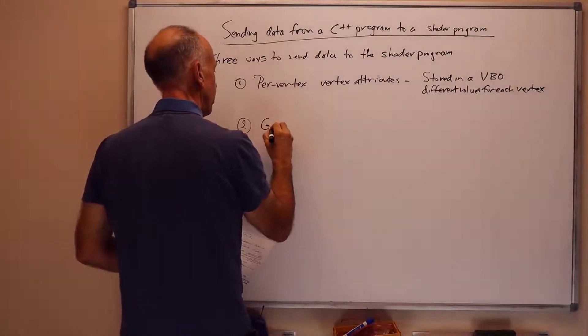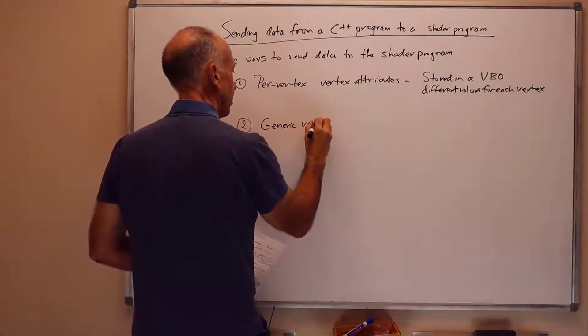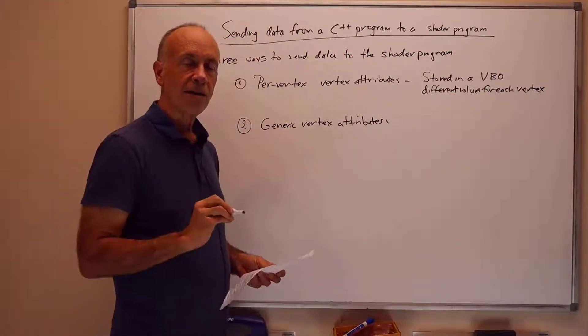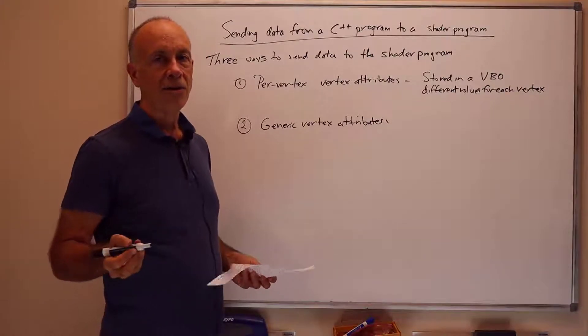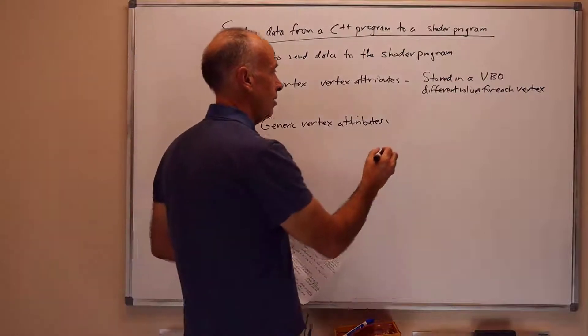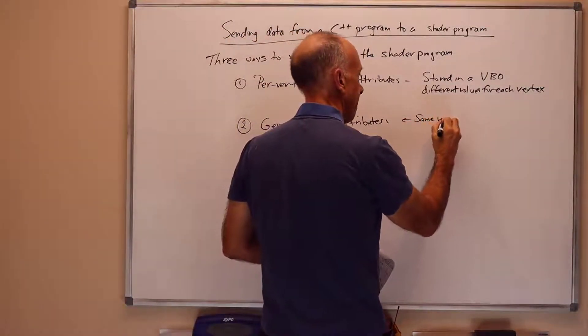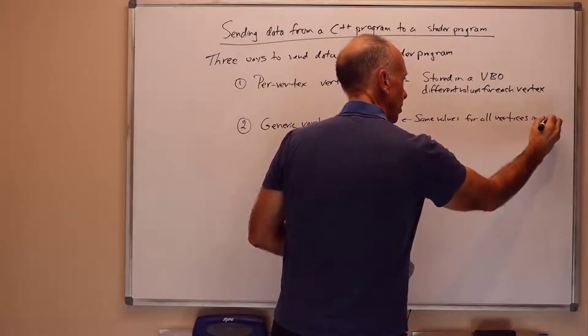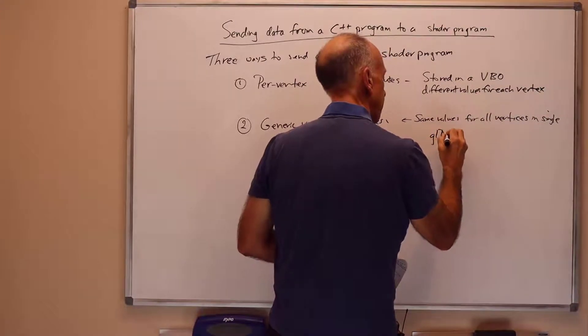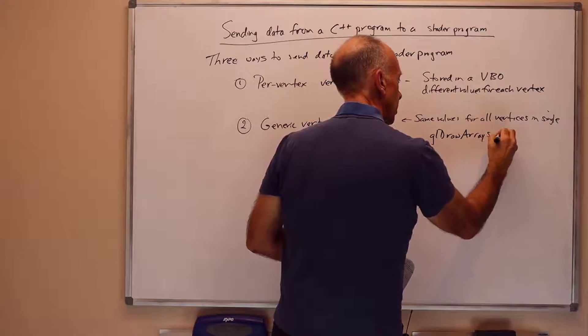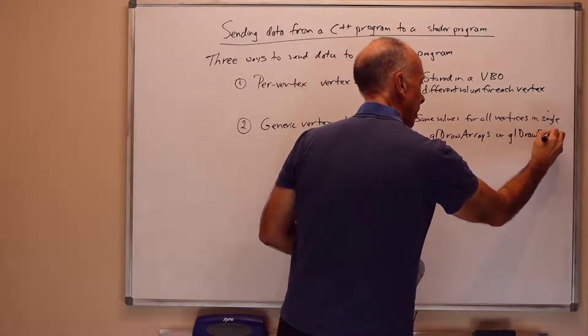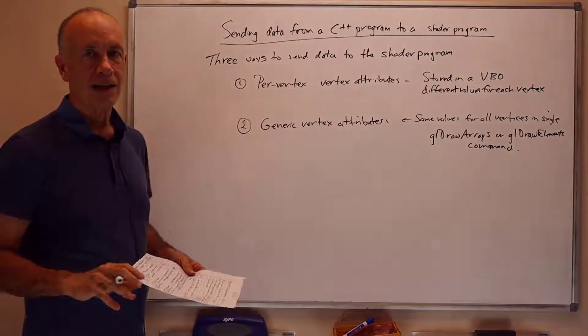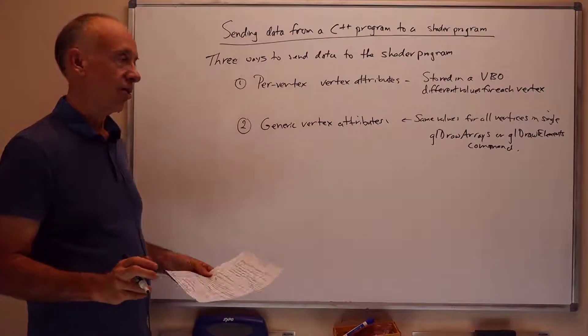The second way is the so-called generic vertex attributes. These are not stored in the VBO, and in fact, they stay the same. These values are still values associated with the vertices, but they stay the same for all the vertices given in a single GL_DRAW command. These are the same values for all vertices in a single GL_DRAW command. In particular, we will usually use either glDrawArrays or glDrawElements. And these values are set, they're given to the VAO, and they don't change, but they can change between calls to glDrawArrays or glDrawElements.